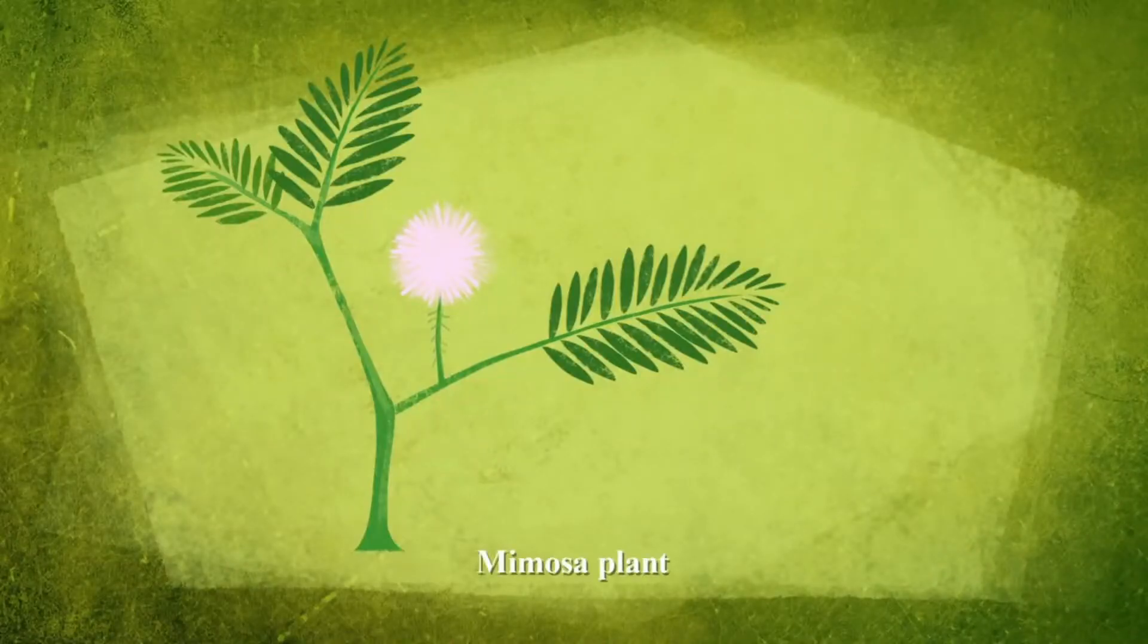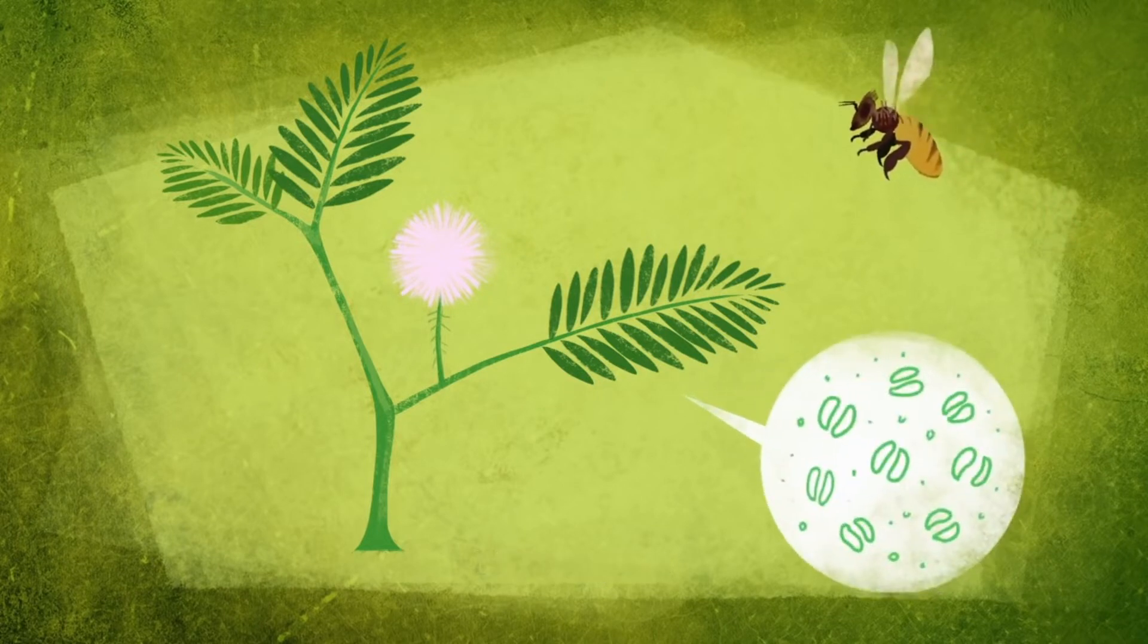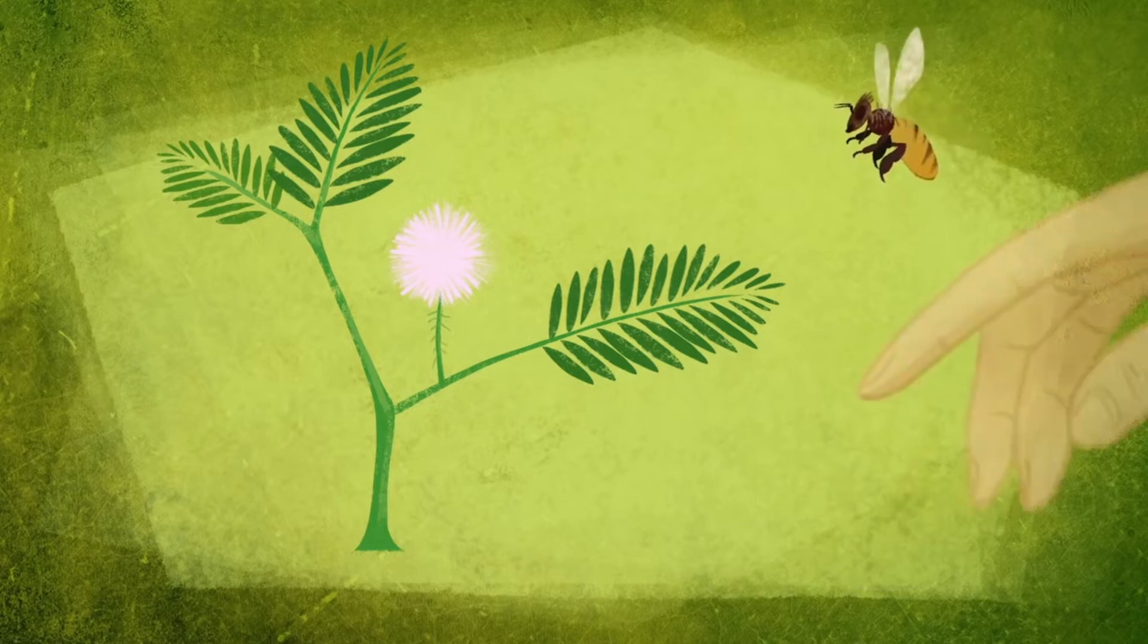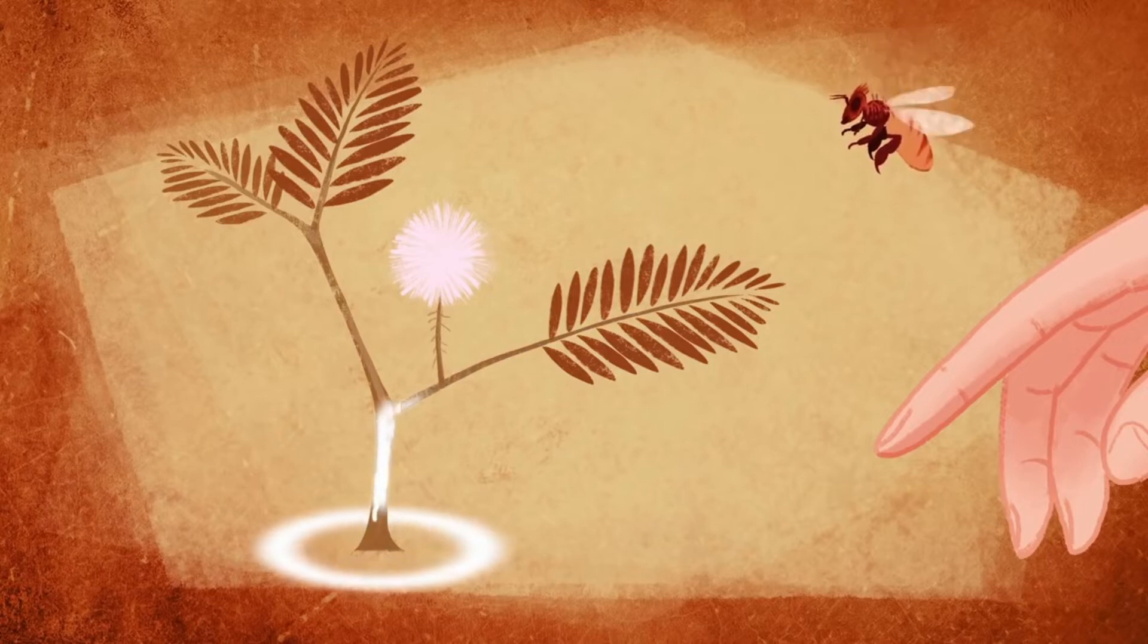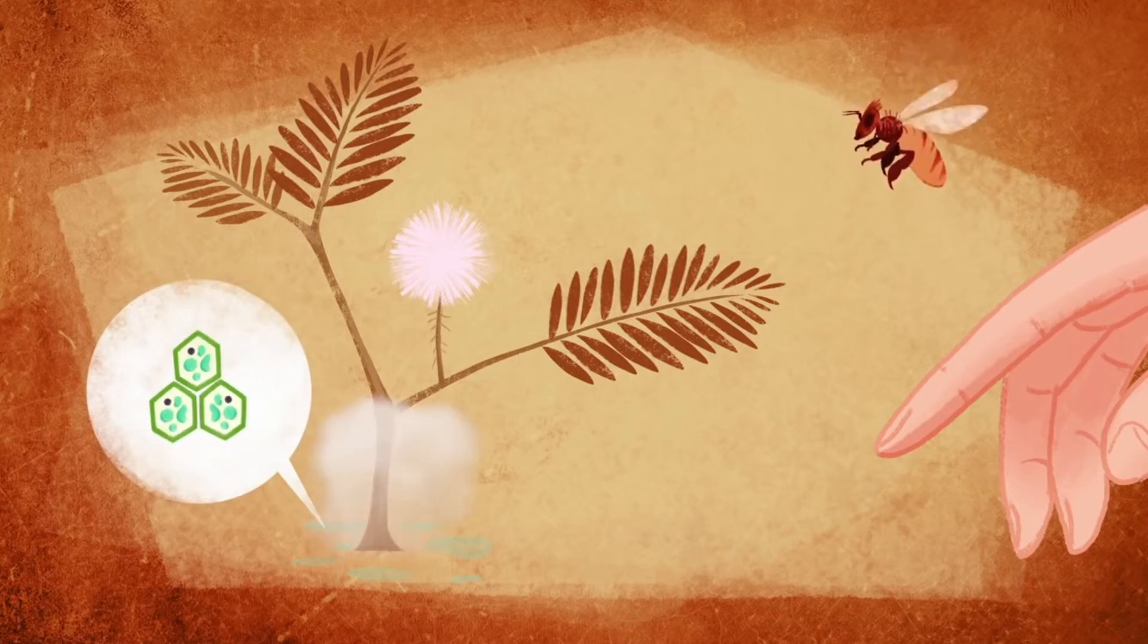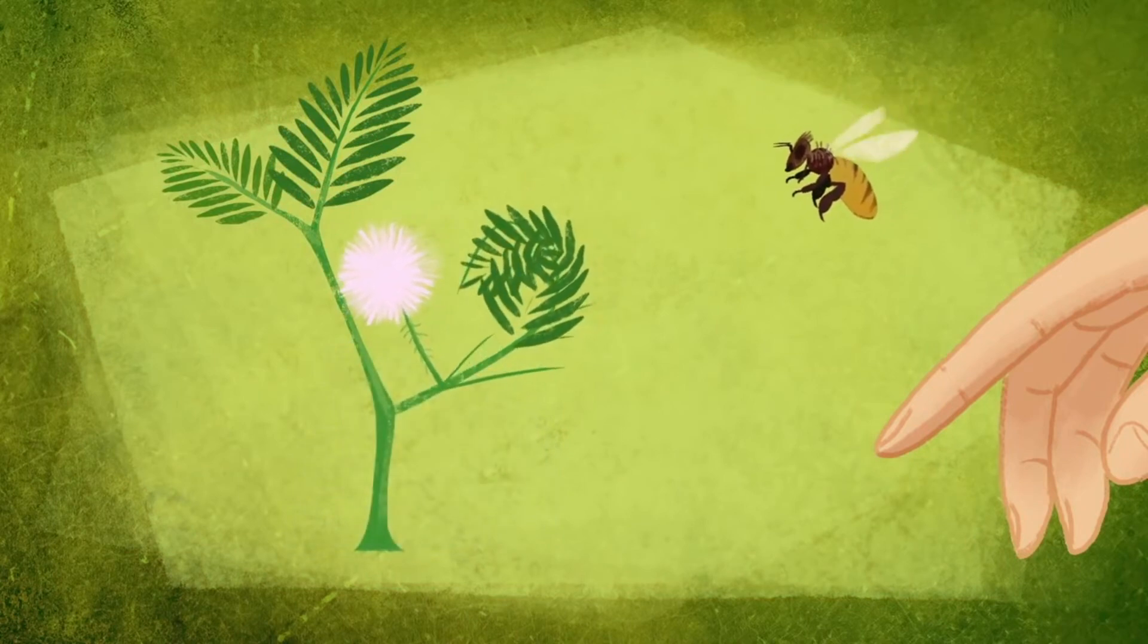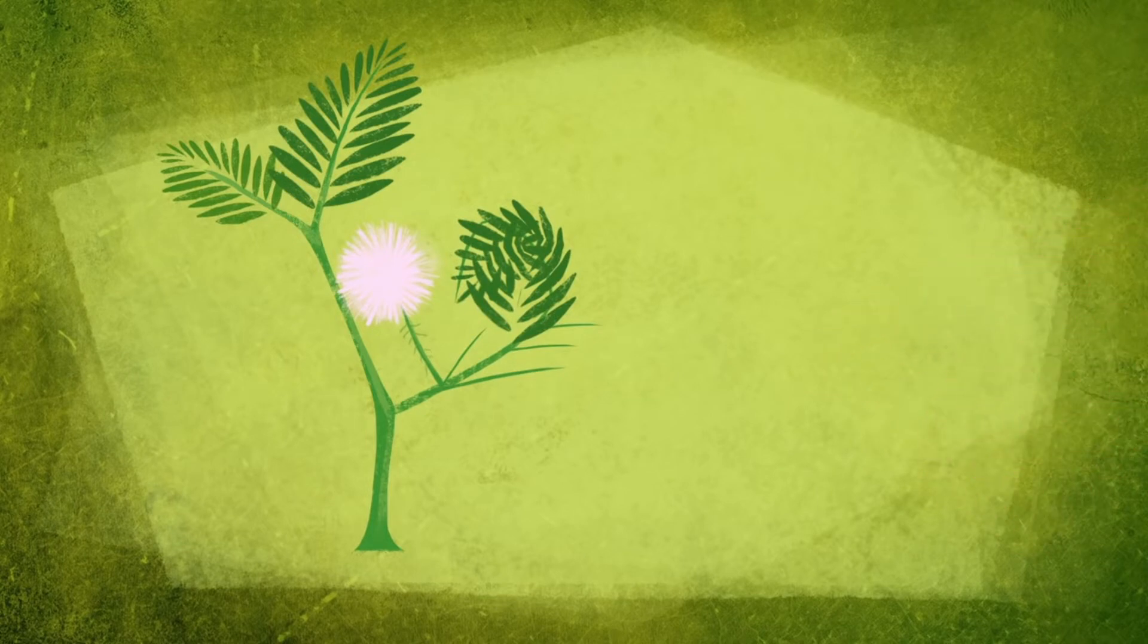The mimosa plant has a strategy designed to prevent herbivores from taking a bite at all. Specialized mechanoreceptor cells detect touch and shoot an electrical signal through the leaflet to its base, causing cells there to release charged particles. The buildup of charge draws water out of these cells, and they shrivel, pulling the leaflet closed. The folding movement scares insects away, and the shrunken leaves look less appealing to larger animals.